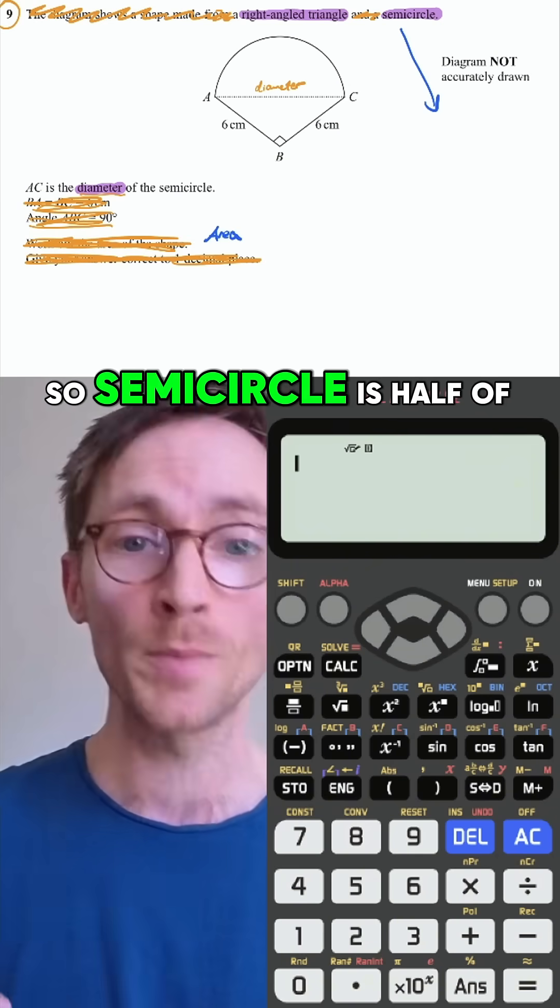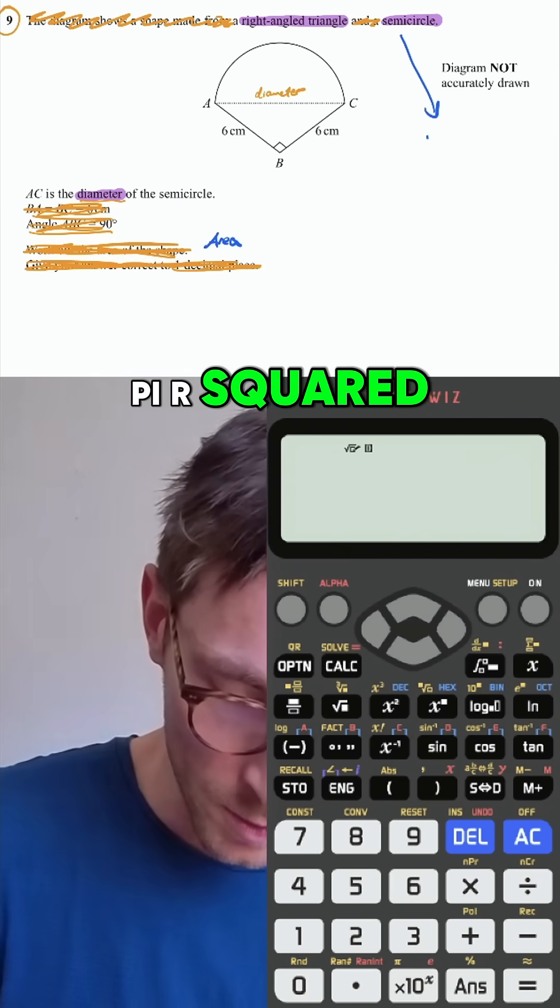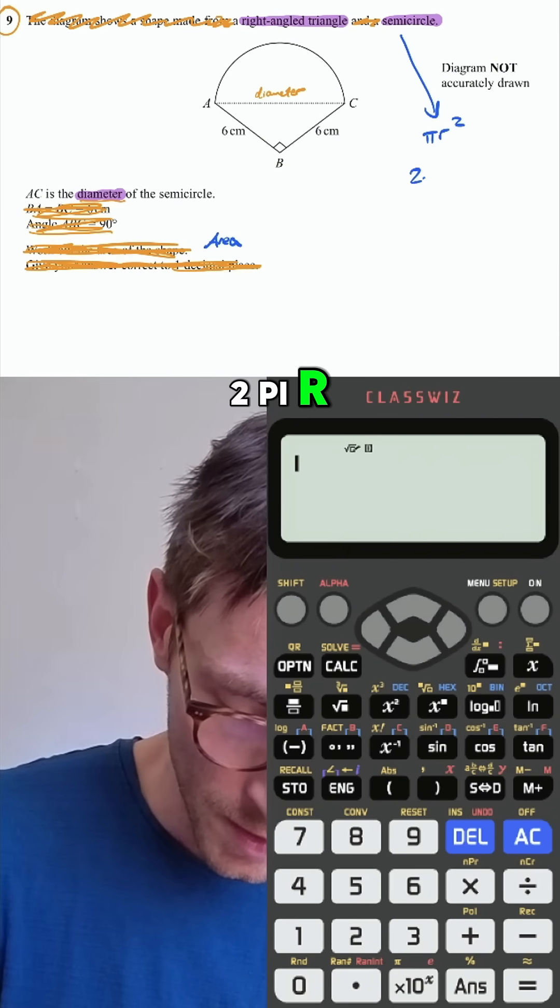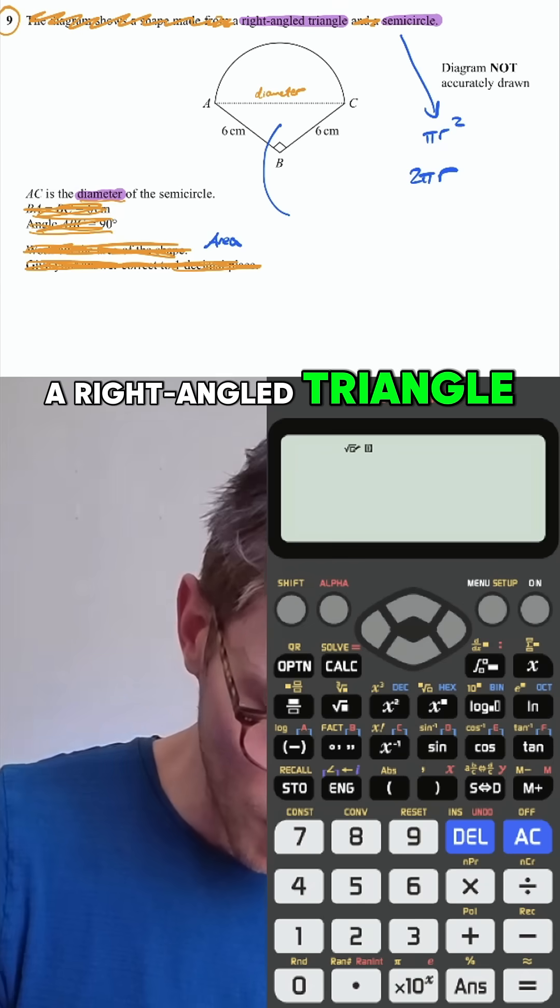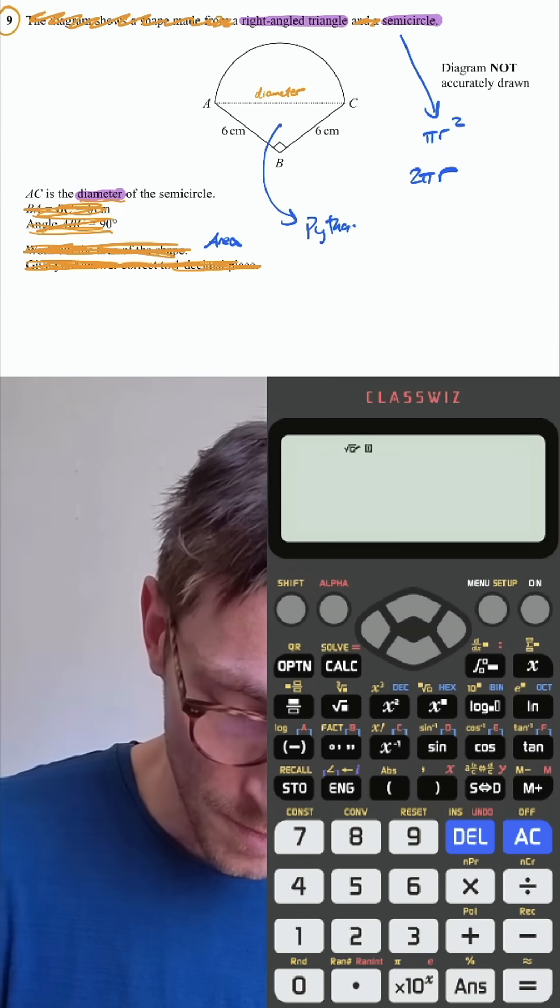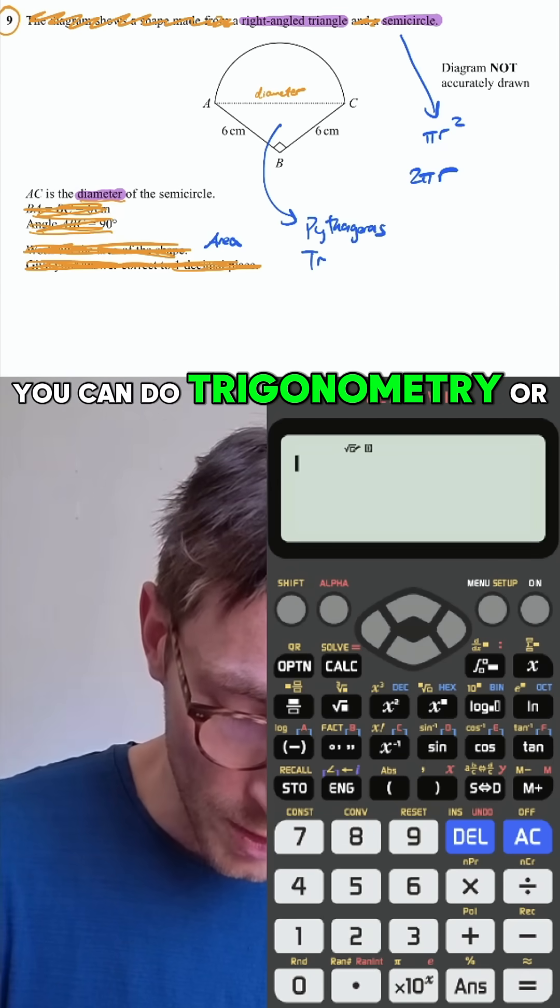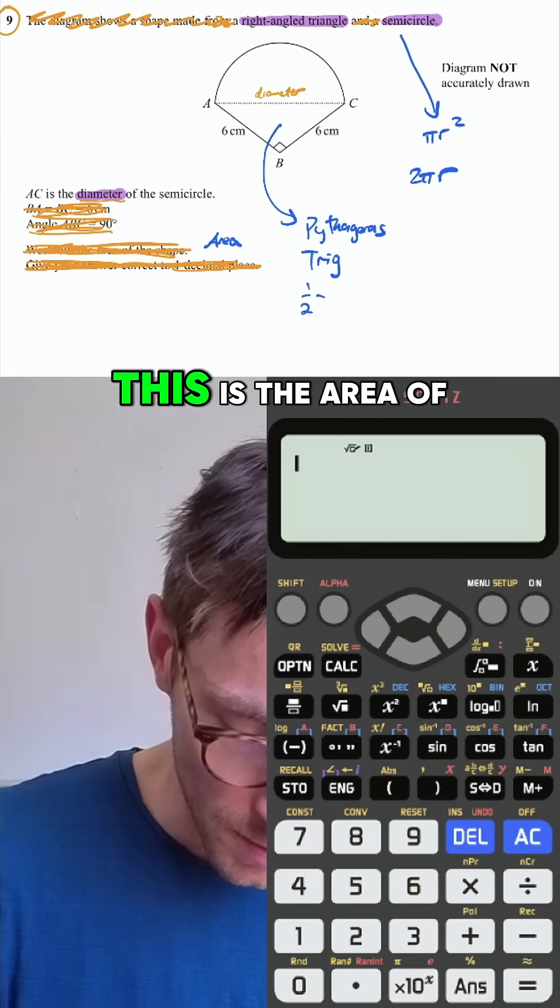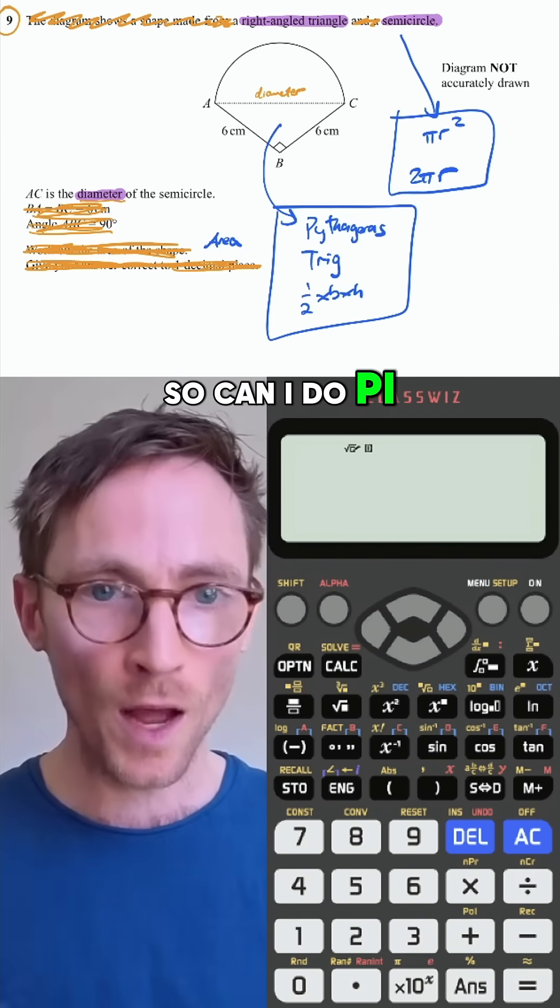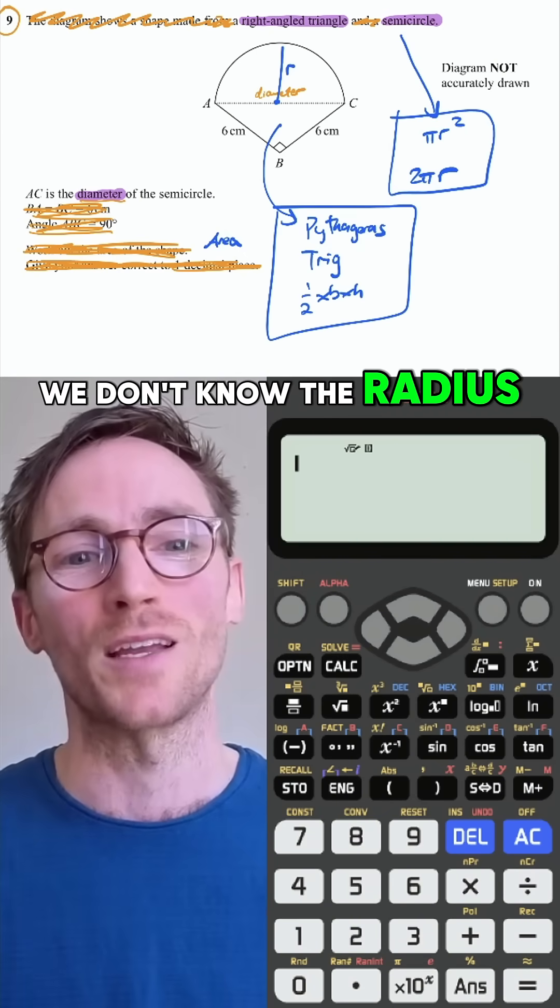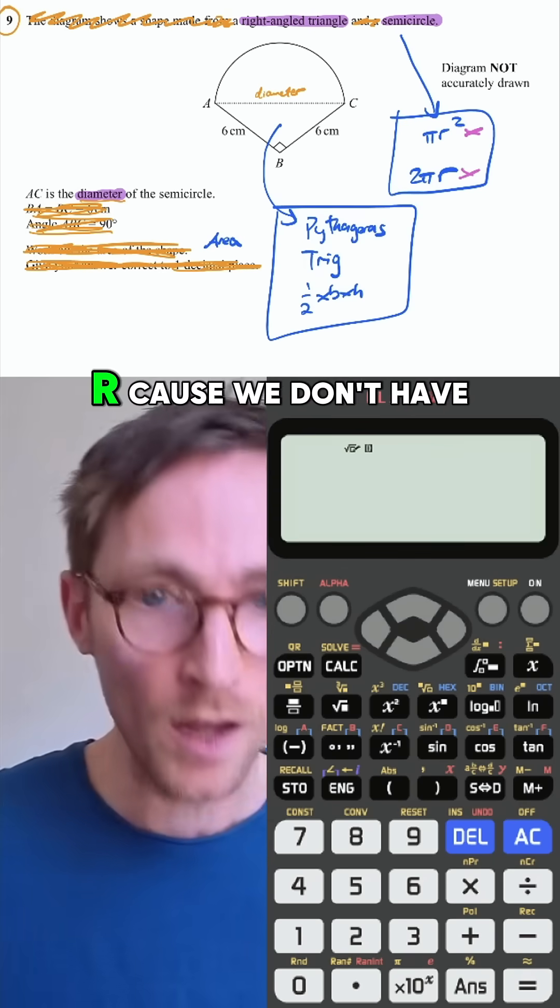Semicircle. So semicircle is half of a circle. Pi r squared or 2 pi r. Those are the only things you can do. What can you do in a right angle triangle? You can do Pythagoras, you can do trigonometry, or you can do half times base times height. This is the area of a triangle. So can I do pi r squared on this circle? We don't know the radius, so we can't do it. We can't do 2 pi r because we don't have the radius.